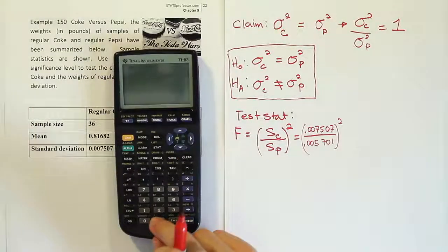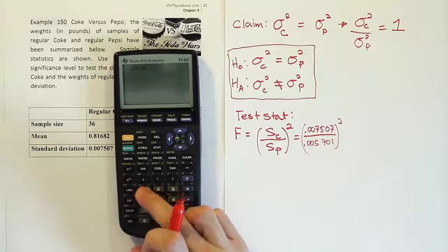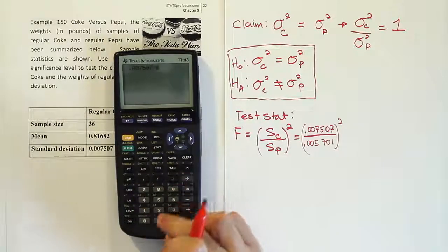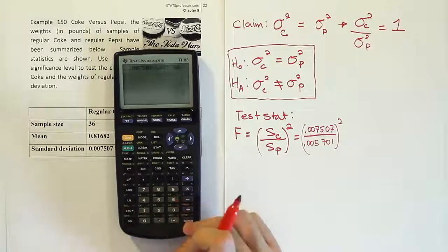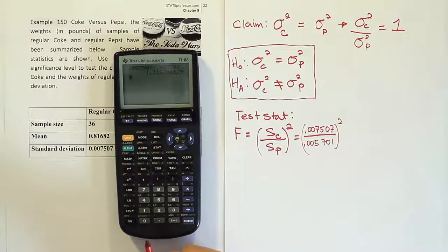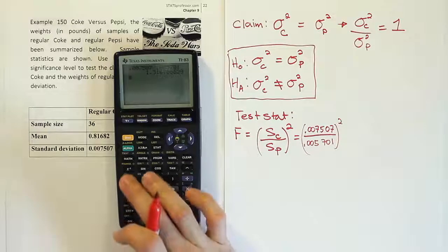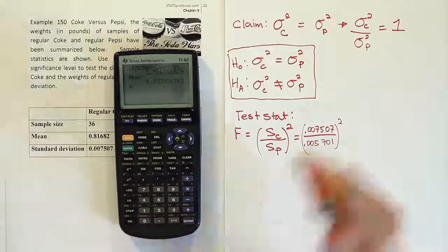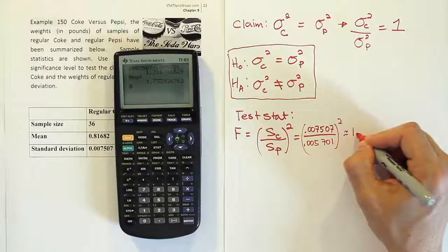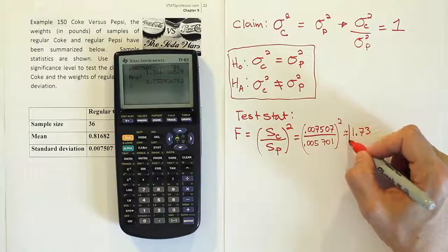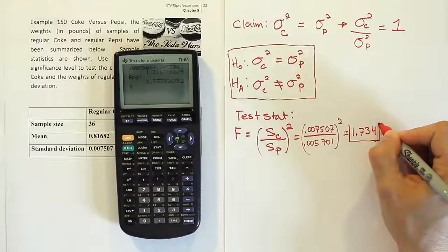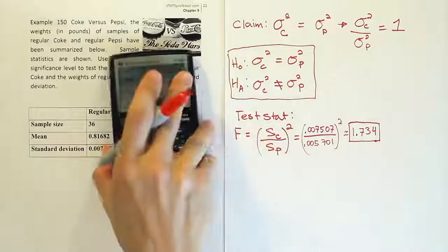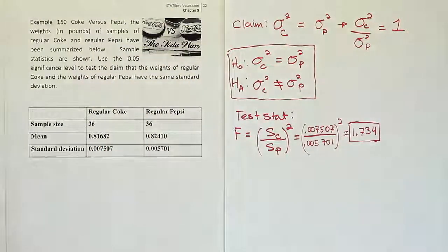Okay, so let's see what that gives us. 0.007507 divided by 0.005701. Hit enter. I get 1.32-ish, but I'm going to square that. Don't forget to square it at the end. And you end up with approximately 1.73. If you want to go out to one decimal place further, it's 1.734. Okay, so there's my F test stat.